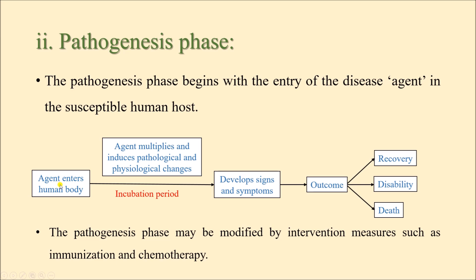The time gap between the entry of the causative agent or pathogen and the time when signs and symptoms develop for the first time is known as the incubation period, which has been explained in detail in previous videos. Once the signs and symptoms have developed, the disease process has already started, and with further progression we shall have the termination of the disease. The possible outcomes are spontaneous recovery, disability, or death.